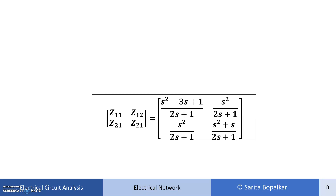In the S domain, inductors are represented as LS — for example, a 3H inductor becomes 3S. Capacitors of value C become 1/(CS) — for example, a 2μF capacitor becomes 1/(2×10⁻⁶·S). Once transformed, apply KVL and rearrange so that V1 and V2 are expressed in terms of I1 and I2, then compare with the standard Z parameter equations to identify each Z parameter.